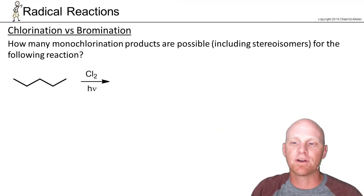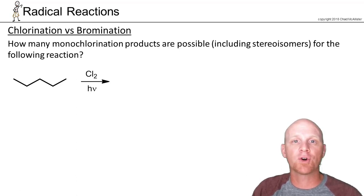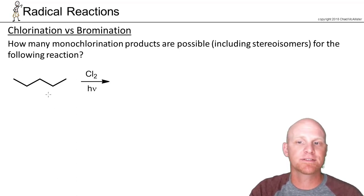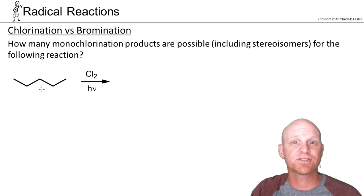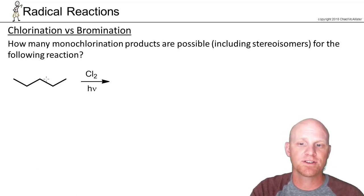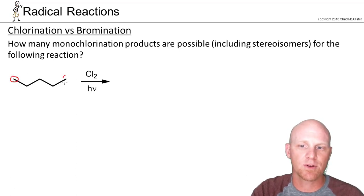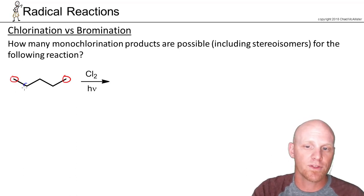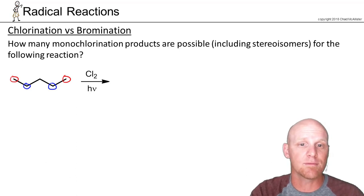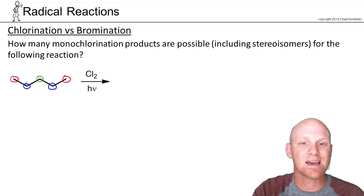Since chlorination is not very selective, a common question is: how many monochlorination products are possible in a given free radical chlorination reaction? Monochlorination means substituting just one hydrogen with one chlorine. Whether you replace a hydrogen on one equivalent end carbon or the other gives the same regioisomer. Similarly for the adjacent carbons. So we get at least three regioisomers.